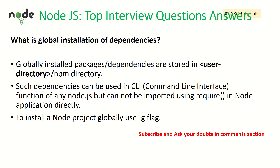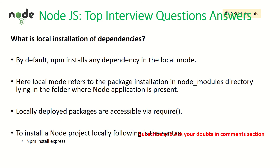What is global installation of dependencies? Global installation is when you run an NPM command with the -g parameter — the package is installed globally inside your user's NPM directory, making it available across all other projects. The next question: what is local installation of dependencies? When you don't use -g, the package is installed locally for that project inside the node_modules directory.